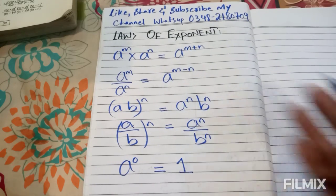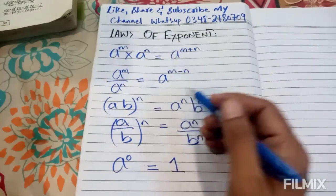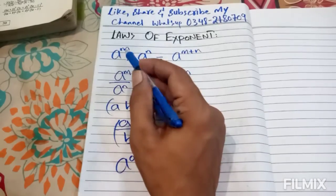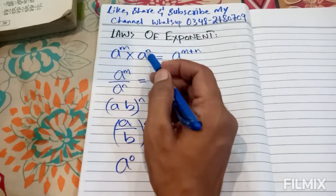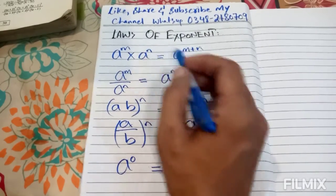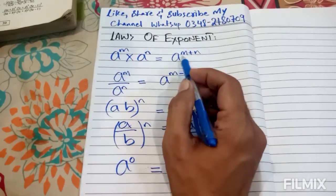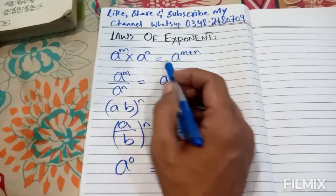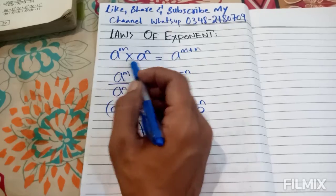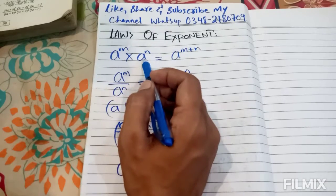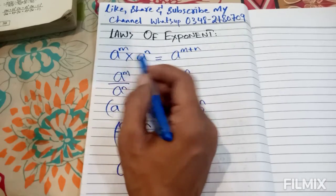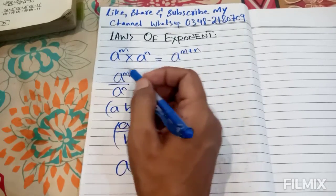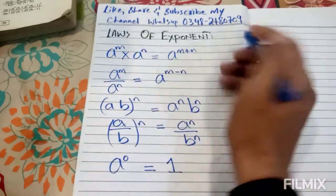This is the first rule: when we have a to the power m multiplied by a to the power n, it is equal to a to the power m plus n. It means that when we have the same base in a product, the powers will be added.